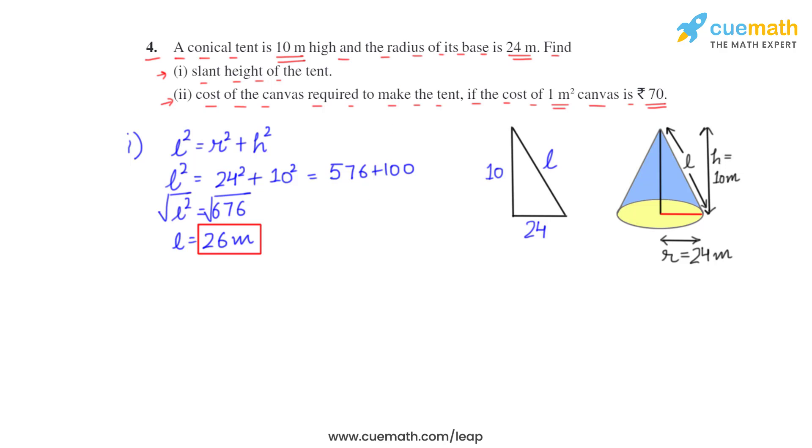So this is the answer for the first part. Now let's do the second part. In the second part it is saying that we have to find the cost of the canvas and the rate is rupees 70 for one square meter. As you can see, the canvas will be required only for the curved part, no canvas is required for the base. So it means we have to find the curved surface area.